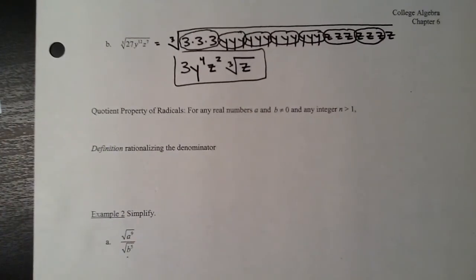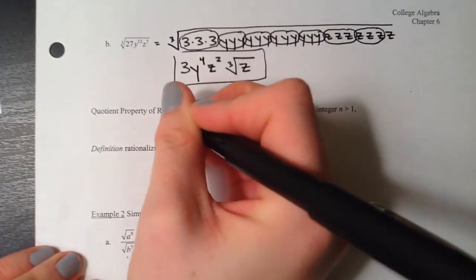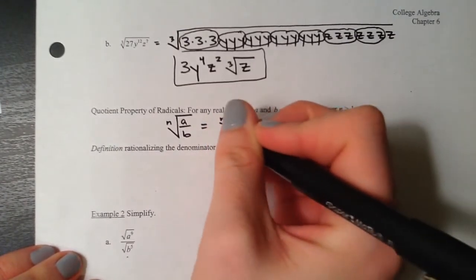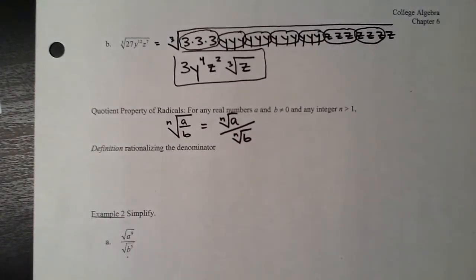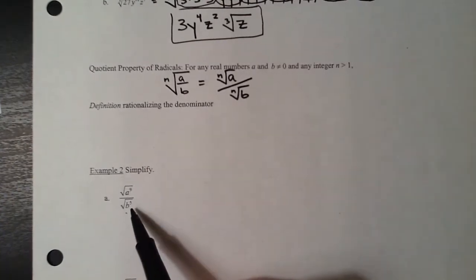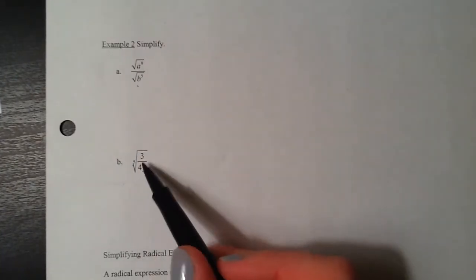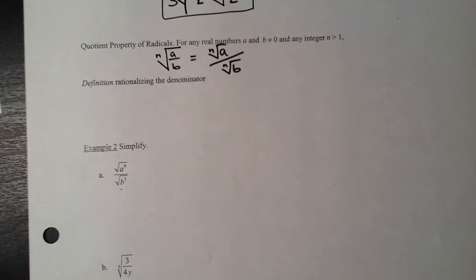Another similar property is the quotient property - very similar to the product property but with a quotient. It tells us we can take the nth root of the numerator and divide by the nth root of the denominator, splitting it up just like with the product rule. We also have something called rationalizing the denominator. Two rules apply: we can't have radicals in the denominator, and we can't have fractions underneath the square root.